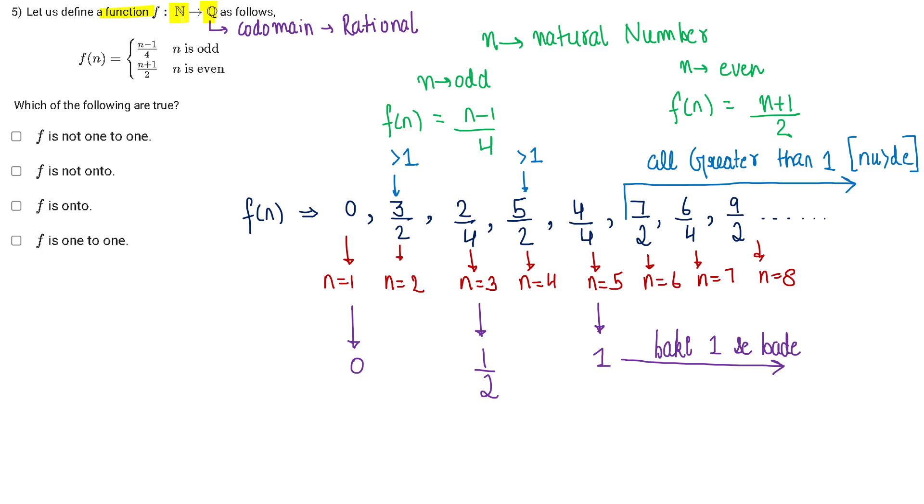That means my domain is natural number and my codomain is a rational number. Now what it is saying is if my n value is odd, then you use that equation to find out the value of a function, and if n is even use this particular equation.